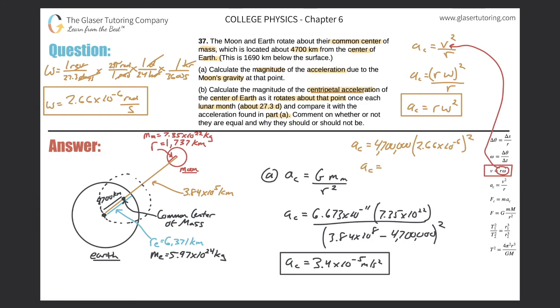So here we got 4.7 million times 2.66 times 10 to the minus six squared. And look at that. 3.3 times 10 to the minus five. That takes care of that. That's letter B there. This is all letter B.